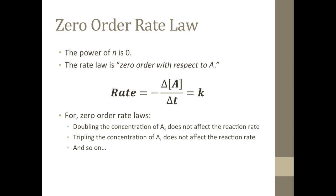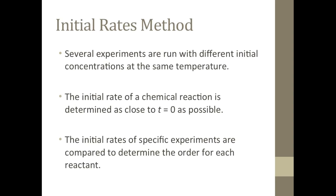Now that you have some familiarity with rate laws, let's look at a method commonly used to experimentally determine the rate law and the rate constant for a reaction with more than just one reactant. It's called the method of initial rates, or the initial rates method. To use this method, we need to look at data from several experiments with differing initial concentrations at the same temperature. The initial rate of each experiment can be compared in order to calculate the order for the reactants.